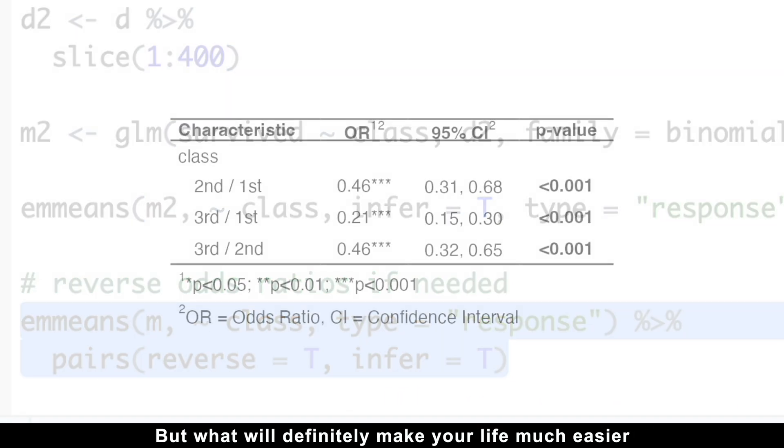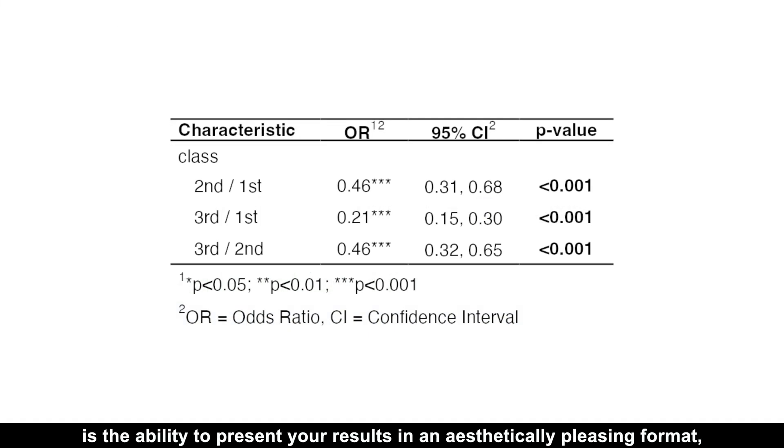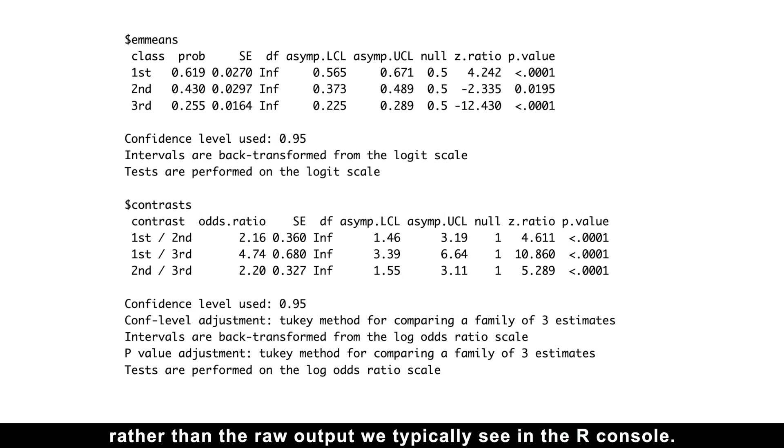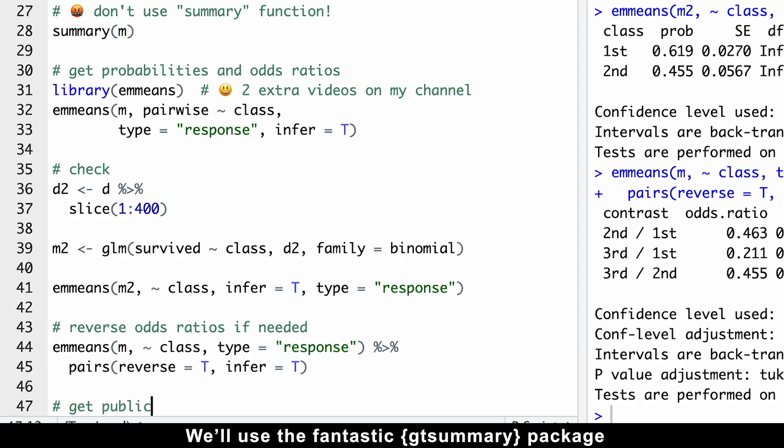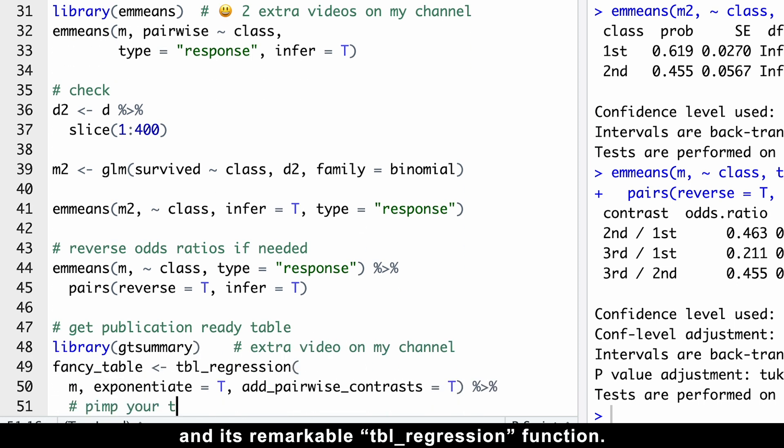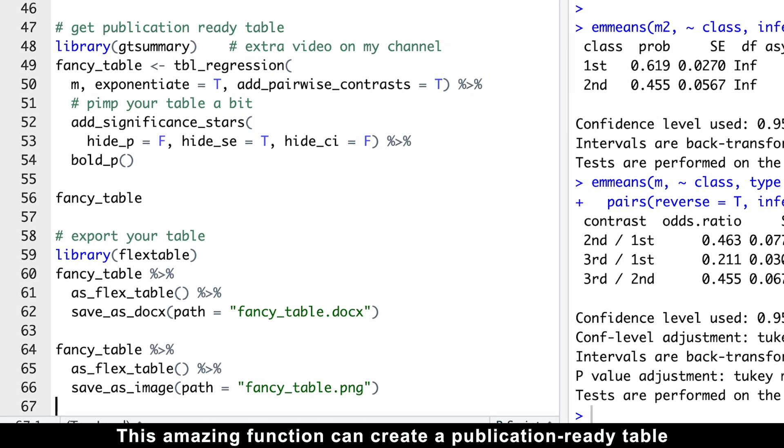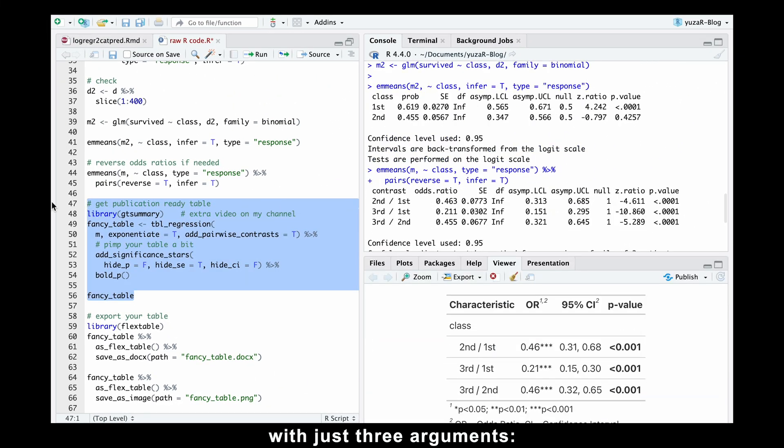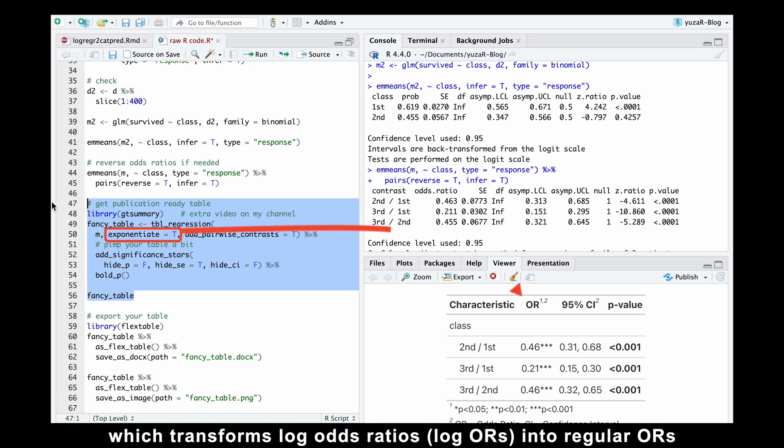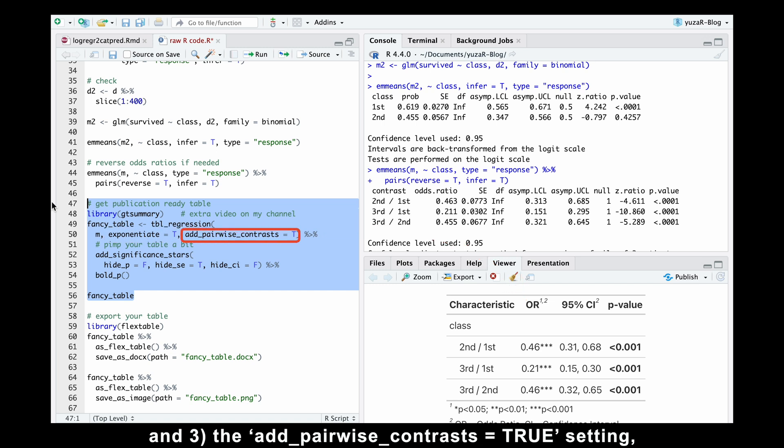But what will definitely make your life much easier is the ability to present your results in an aesthetically pleasing format, rather than the raw output we typically see in the R console. We'll use the fantastic gtsummary package and its remarkable table regression function. This amazing function can create a publication ready table with just three arguments: the model object, the exponentiate equals true option which transforms log odds ratios into regular odds ratios, and the add pairwise contrasts equals true setting which allows us to compare all categories with each other rather than just against a reference category.